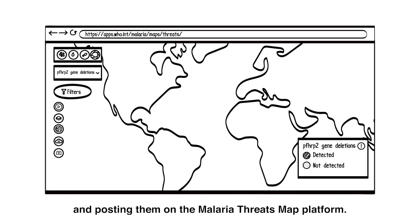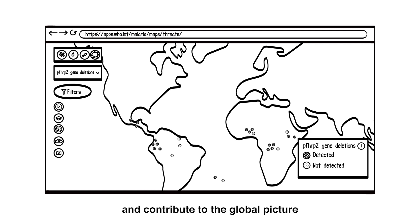WHO has also been tracking published reports of HRP2 deletions and posting them on the Malaria Threats Map platform. This data can help to inform where surveillance activities are being conducted, identify what areas should be prioritized, and contribute to the global picture of how this threat is evolving over time.